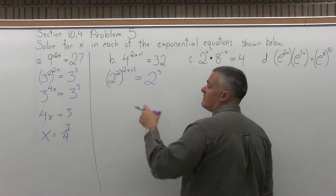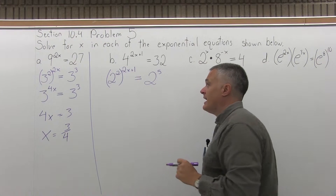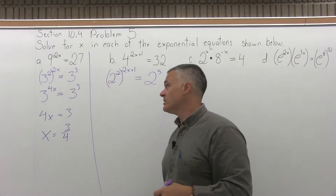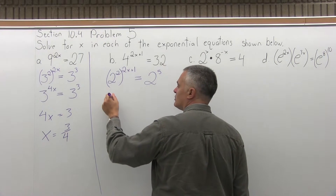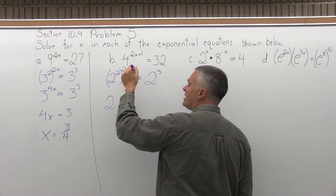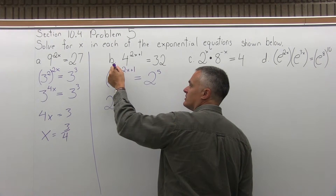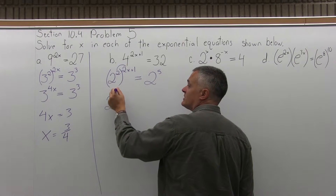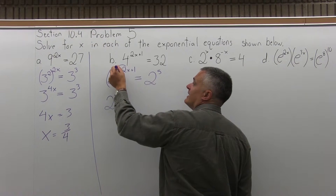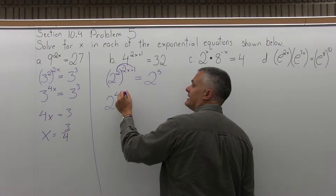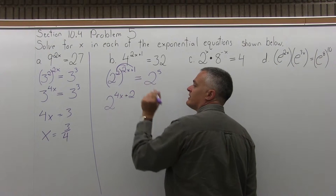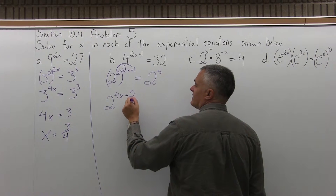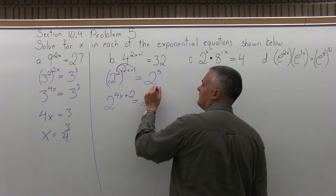Now on the left I have a power to a power. The rules for exponents say when you have a power to a power, you multiply the exponents. So on the left, 2 to the second to the 2x plus 1 — multiply the exponents, the 2 and the 2x plus 1. So 2 times 2x is 4x, and 2 times 1 is 2. So the left side is 2 to the 4x plus 2 power, and the right side stays 2 to the 5th.